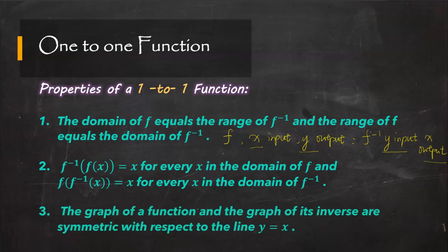The last property is that the graph of a function and the graph of its inverse are symmetric with respect to the line y = x. The line y = x is a 45-degree linear line — it acts like a mirror, and f⁻¹ will be the reflection of the original f(x).